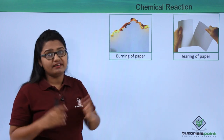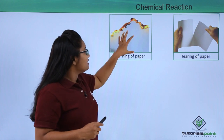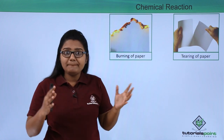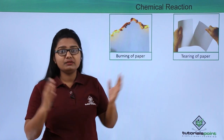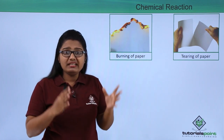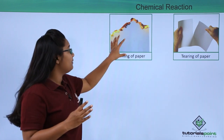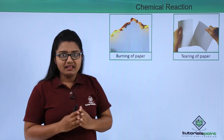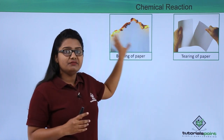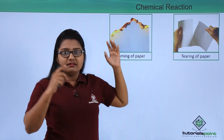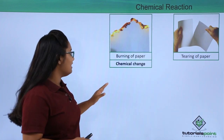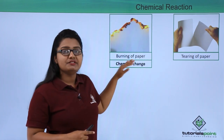Burning of paper, on the other hand, results in the formation of a completely new thing — ash. We are left with only ash when the paper is completely burnt. These kinds of changes, which involve the formation of a completely new substance, are termed chemical changes or a chemical reaction.